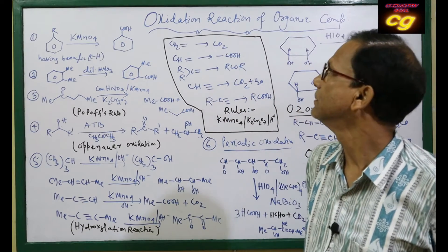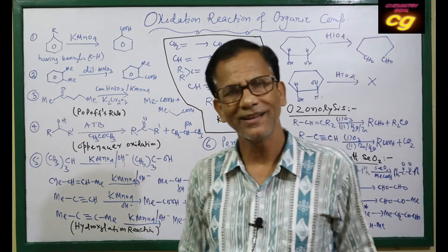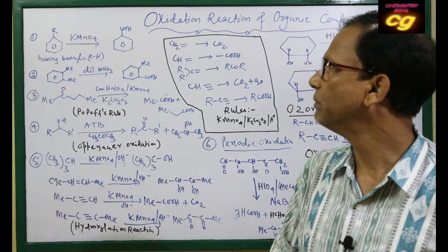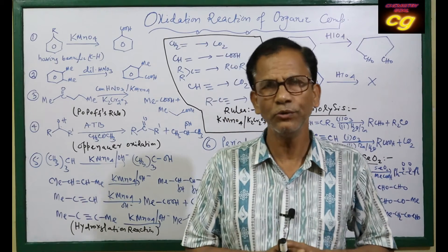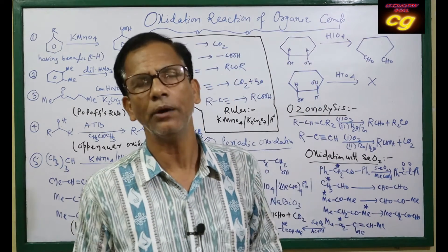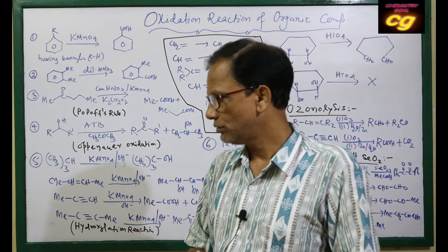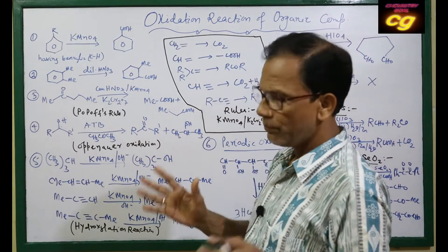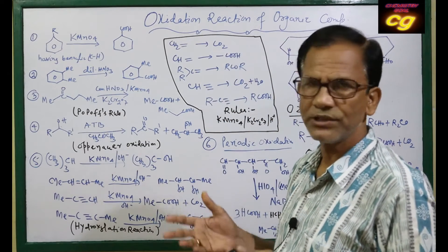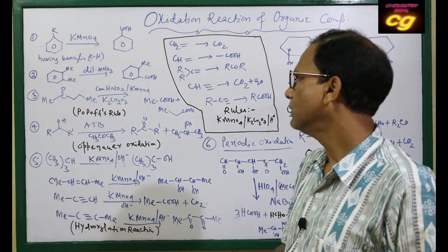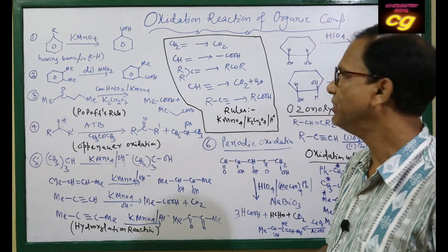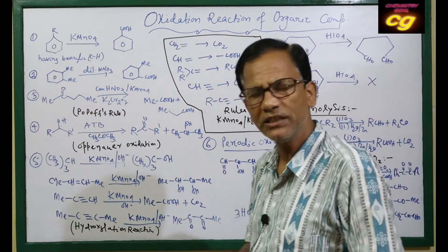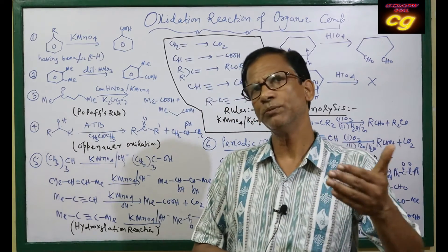Today we are going to discuss oxidation reactions of organic compounds. In the last class we discussed different reduction reactions. In the oxidation of organic compounds, specific oxidizing agents are used which oxidize organic compounds into particular products. The nature of the product depends upon the nature of the reagent used. The main oxidizing agents used are potassium permanganate in acidic or alkaline medium, ozone, periodic acid (HIO4), and selenium dioxide.